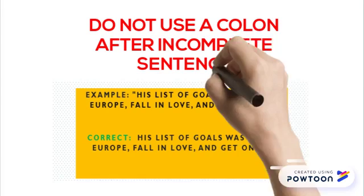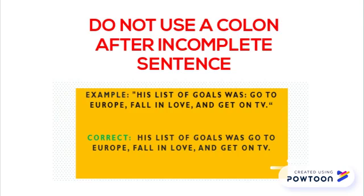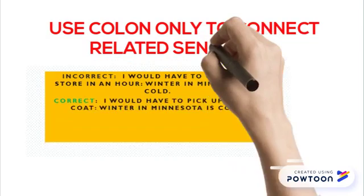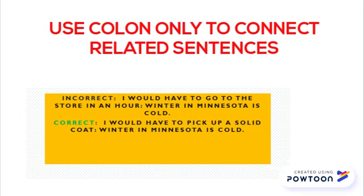Common colon mistakes. Don't use a colon after an incomplete sentence. The correct way would be: his list of goals was to go to Europe, fall in love, and get on TV. Use colons only to connect related sentences. The correct way would be: a solid coat colon — winter in Minnesota is cold.